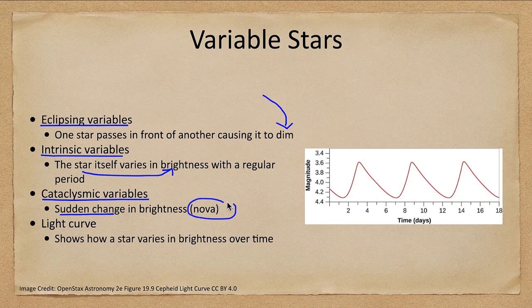A nova is one example of cataclysmic variables, where there is a very sudden change in brightness. Now we will look at cataclysmic variables and eclipsing variables later on, but really what we want to talk about are the intrinsic variables here.